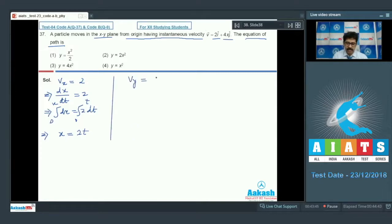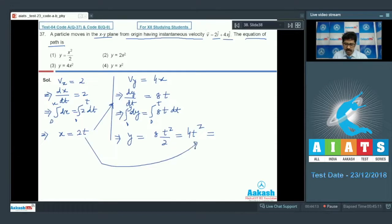Similarly, y component of velocity is given, that is 4x, and this is dy by dt. Put the value of x here. This will be 8t. x equals 2t, put here, so that implies dy equals 8t dt. Integration 0 to y and 0 to t. So that implies y equals 8t square by 2, or that is 4t square. Again t's value, x by 2. So 4 into x square by 4, 4-4 cancel. y equals x square. So this is the equation of the trajectory of the particle or equation of the path. Correct option is option number 4.